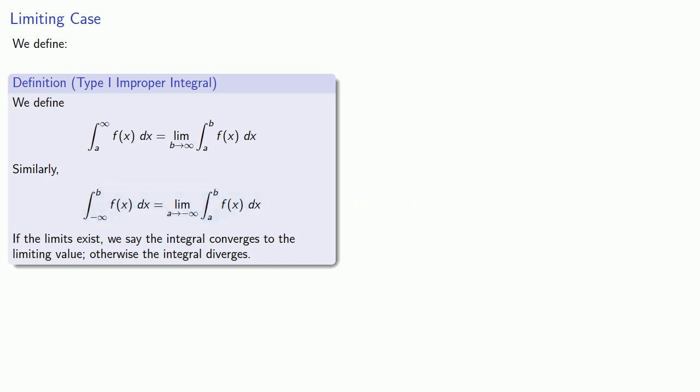Now while the definite integrals exist, the improper integral is defined as a limit, and so there is a possibility the limit doesn't exist. And so if the limits exist, we say the integral converges to the limiting value, otherwise the integral diverges.